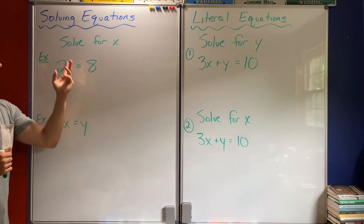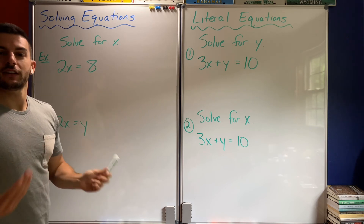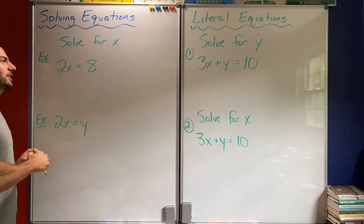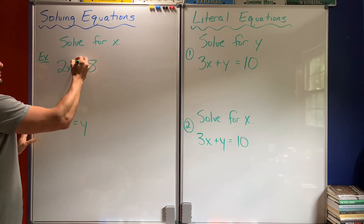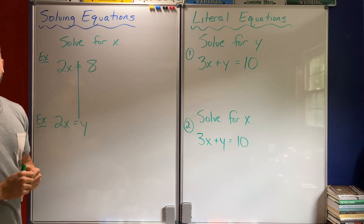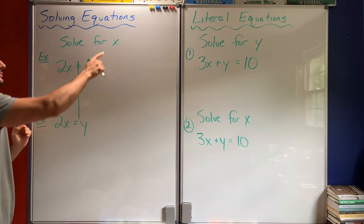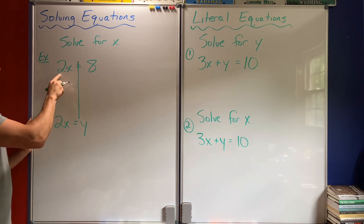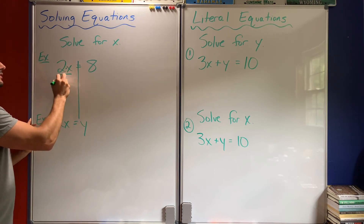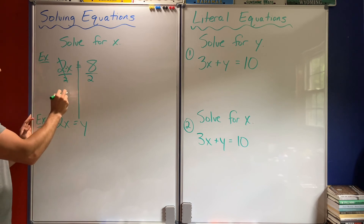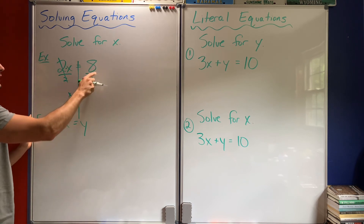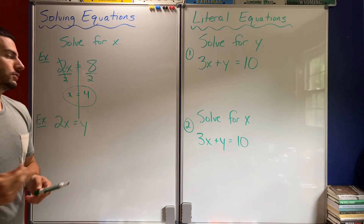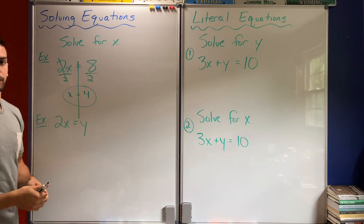This first example: solve for x, 2x equals 8. This isn't a literal equation — it's got just one variable, and it should be super easy at this point. 2x equals 8, solving for x, I would just undo the multiplication by dividing by 2 from both sides. So x is going to equal 8 divided by 2, which is 4. I find my x answer is 4.